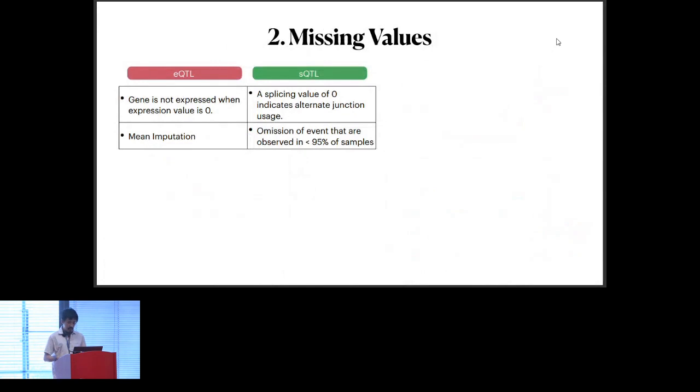The second key takeaway from this GTEx case study is that when it comes to missing values, the way missing values should be handled in an EQTL study and an SQTL study are fundamentally different. When we don't observe gene expression, the value that we observe is zero. But when we observe a zero in splicing data, this actually represents the use of an alternate junction. In the EQTL field, people will just use mean imputation to impute missing values. But when it comes to SQTL analysis, there have been many recent high-profile studies where they basically just discard all the data that is not observed in 95% of the samples.